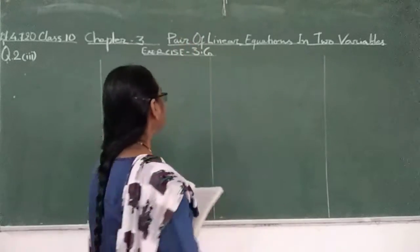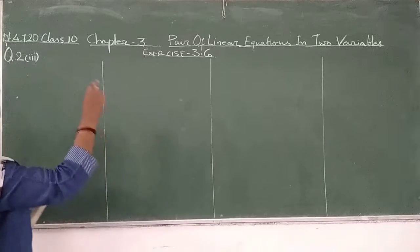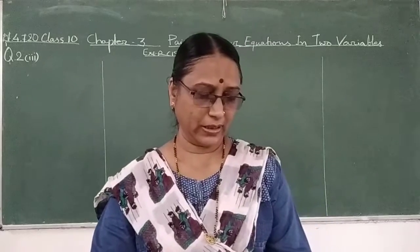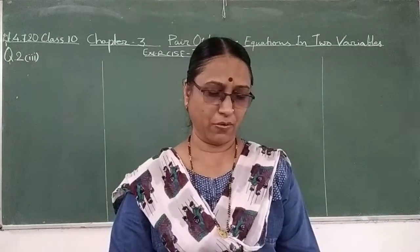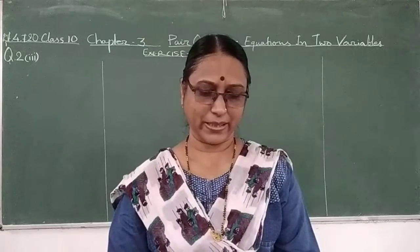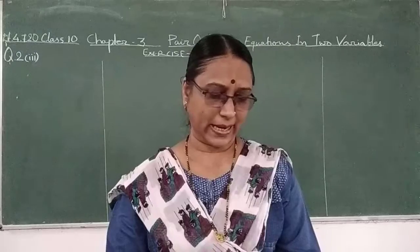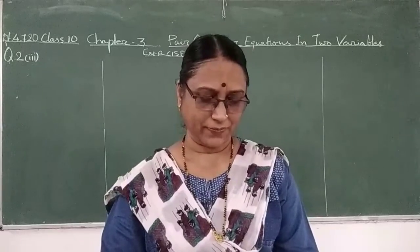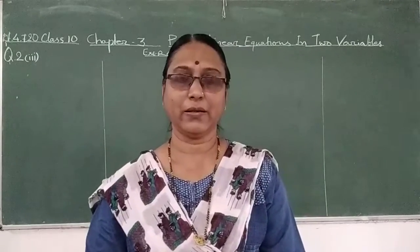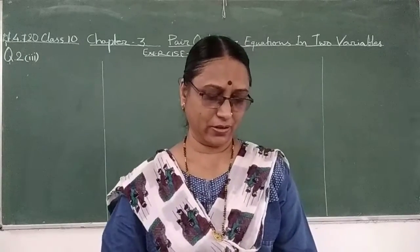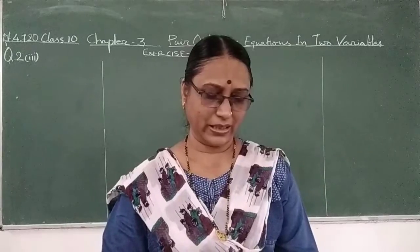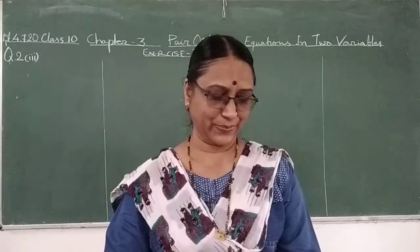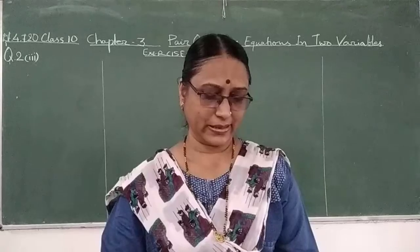Hello students. Exercise 3.6, this is the third portion of question number 2. Ruhi travels 300 km to her home partly by train and partly by bus. She takes 4 hours if she travels 60 km by train and the remaining by bus. If she travels 100 km by train and the remaining by bus, she takes 10 minutes longer. Find the speed of the train and the bus separately.